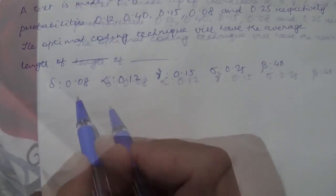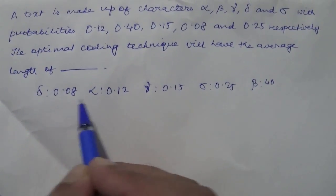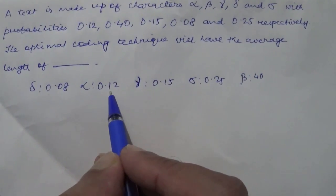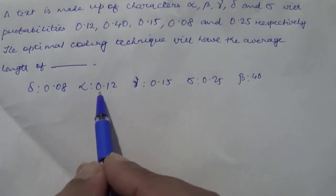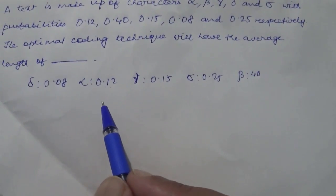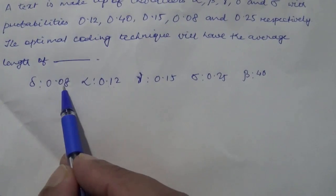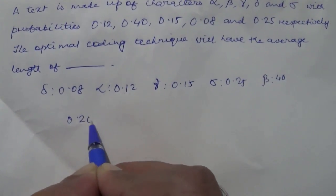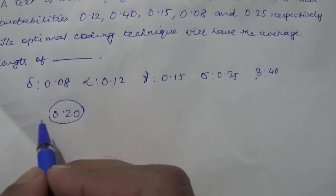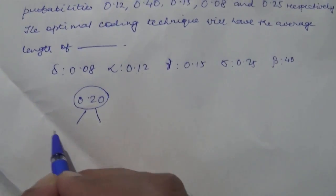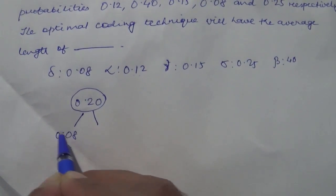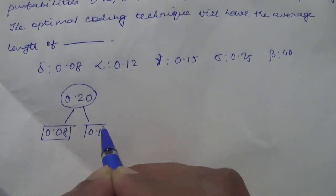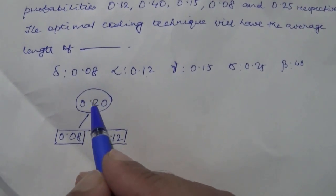Now we will add these two least values. The least value is 0.08 and the next higher value is 0.12. Always try to add the lowest values first. So 0.08 plus 0.12 creates 0.20 — make a node here because you have derived it from 0.08 and 0.12.